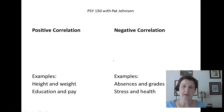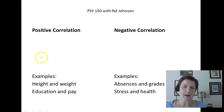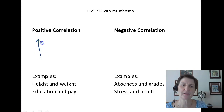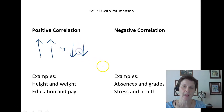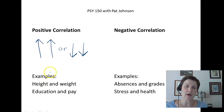Let's look at what we mean by a positive correlation and a negative correlation. In a positive correlation, both variables are moving in the same direction — they both go up or they both go down. An example of a positive correlation is height and weight: as height goes up, weight tends to go up.